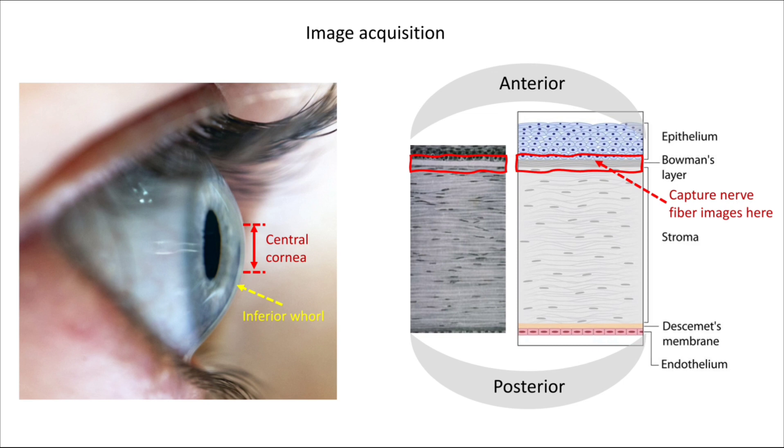Looking at the cross-sectional part of the corneal tissue, where there are several layers, we're focusing on capturing images within the sub-basal nerve layer, which is about 50 micrometers in depth and is located between the epithelium and the stromal layer.